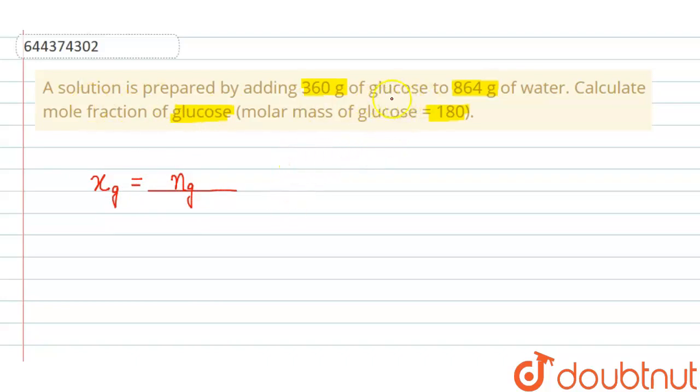In the solution, glucose and water are present, so the total number of moles will be given by the number of moles of glucose plus the number of moles of water.